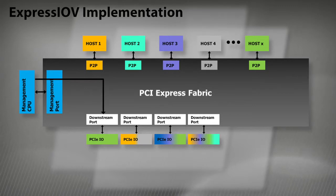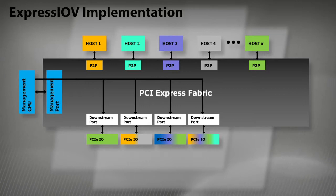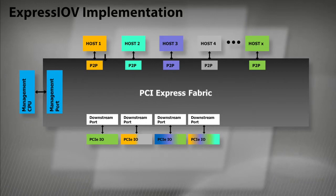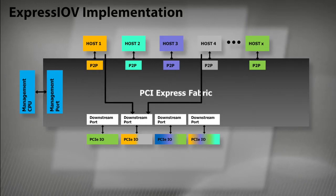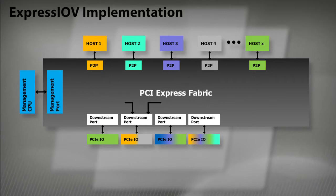Now, how does all this work? The fabric is managed by a dedicated CPU, which allows web-based management to assign resources to the server nodes and establish communication paths between server nodes and IO devices or common resources. Hosts are then enabled to configure and enumerate the virtual functions. Initially, the MCPU does the discovery of IO devices, responds to the host, and does the enumeration cycles. It then loads and runs the vendor-supplied driver and enumerates the IO devices.